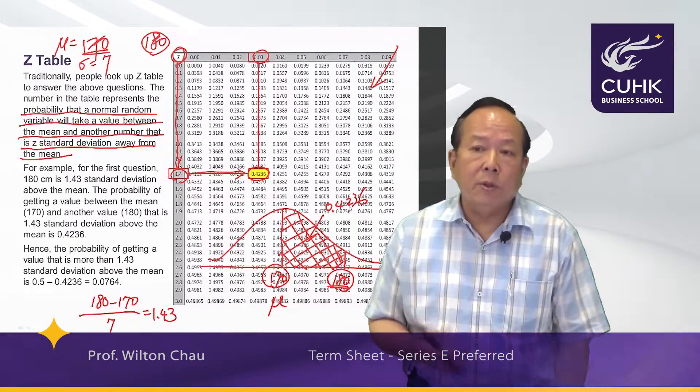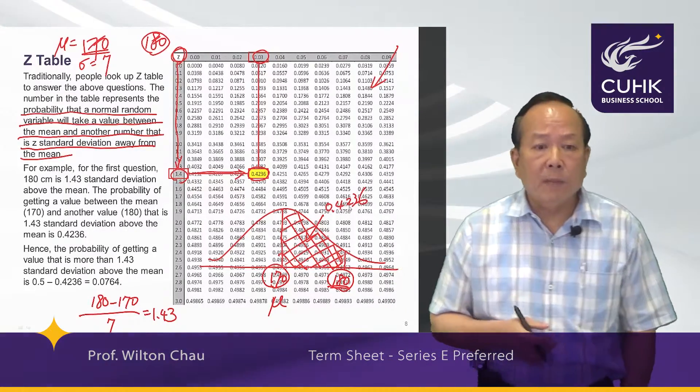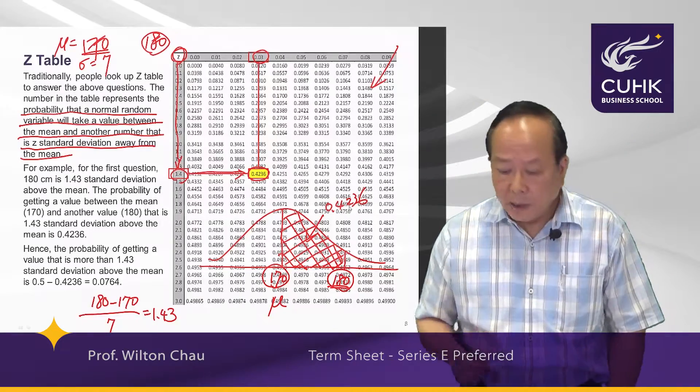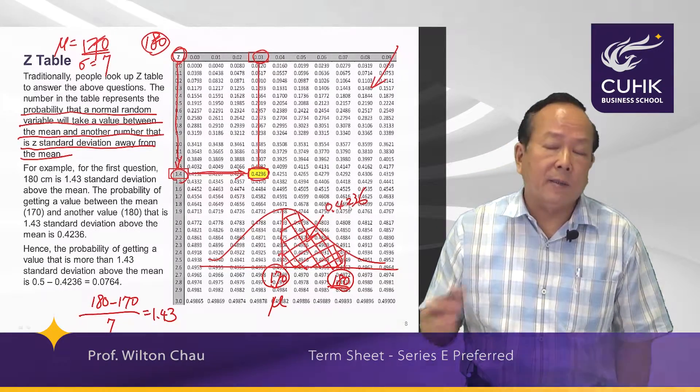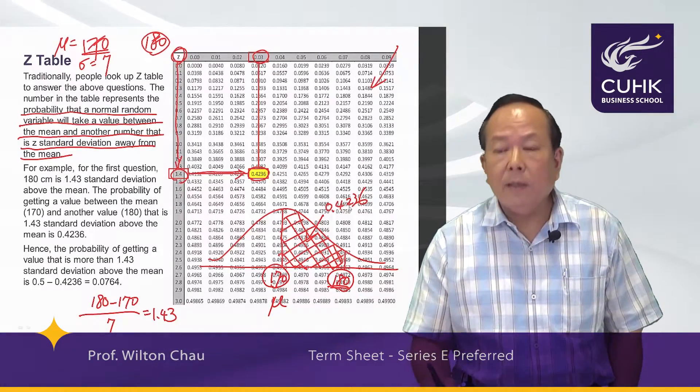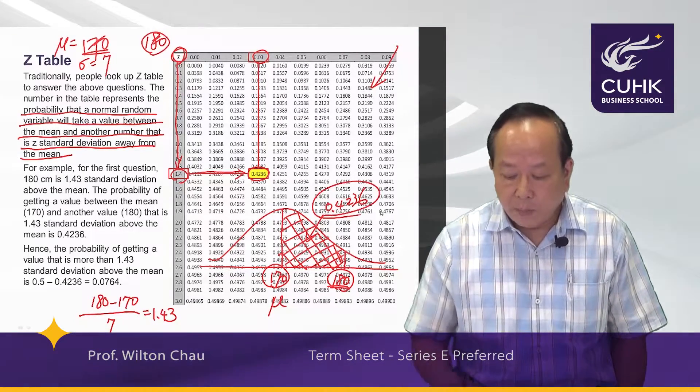But our original question was, what percentage of people are taller than 180? Well, that's easy. Even though the table didn't give us the answer, we can easily infer the answer from this probability.